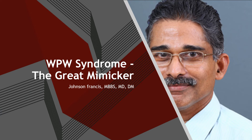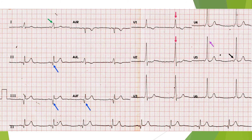WPW syndrome is a great mimicker on the electrocardiogram. It can mimic various conditions which we will come to shortly. This ECG shows WPW syndrome. In V5 you can see a black arrow which marks the delta wave as well as short PR interval, which are characteristic of WPW syndrome.